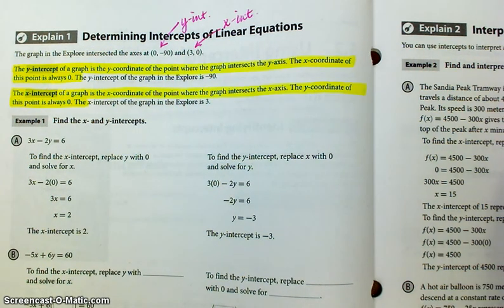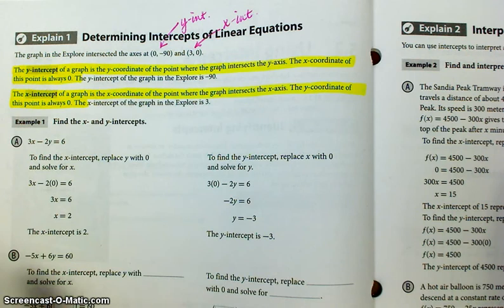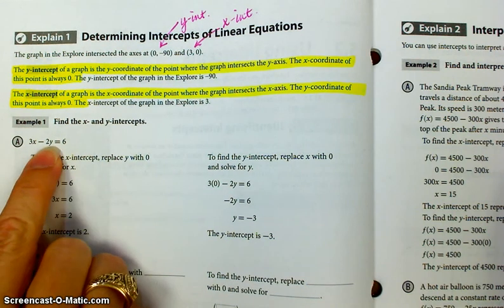What other ways can we find x- and y-intercepts? We graphed for the first example. Now we've got some other examples. This is written in standard form.